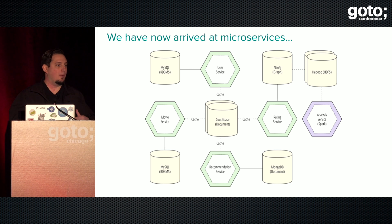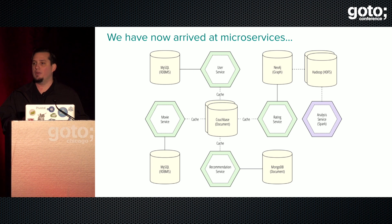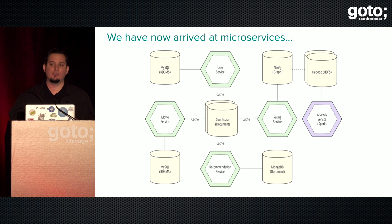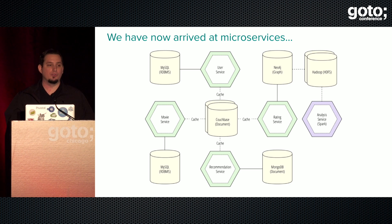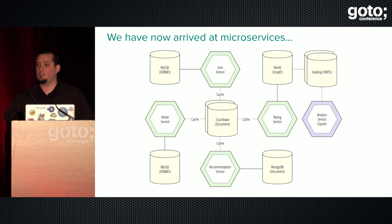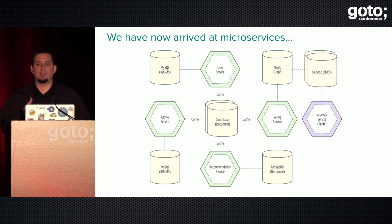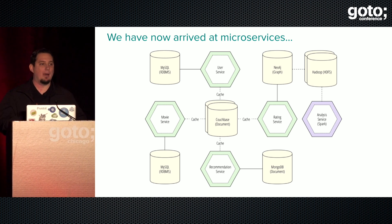But things also become harder. If we have a transaction that spans multiple services, how do we manage rolling back an inconsistent state across three different services? If I have a transaction spanning the rating service, user service, and movie service, and something goes wrong with the user service, I've changed state in three different databases — all with different guarantees — and have no reliable way to roll back. That's why we use things like event sourcing: we have an audit trail of all events that changed system state, which can be used to roll back.